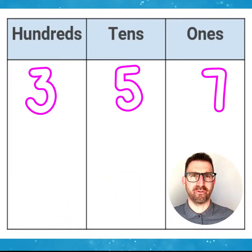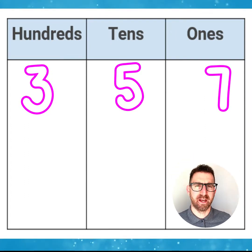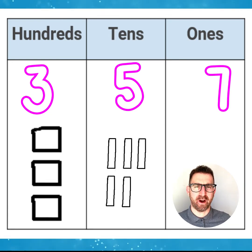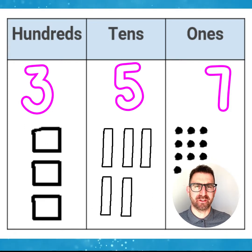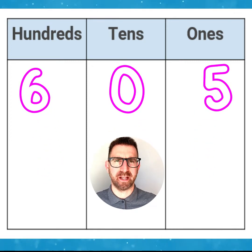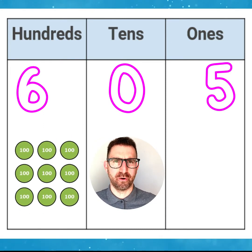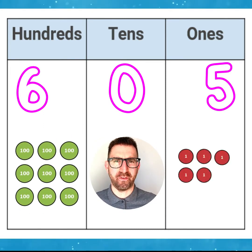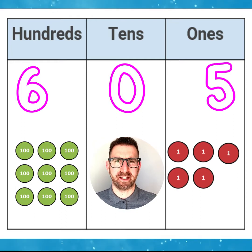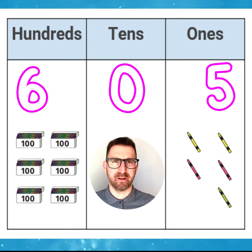Numbers to 1000 can be represented in different ways. For example, drawings could be used to represent a number such as 357. Here we have representations of base 10 — 3 squares, 5 rectangles and 7 dots to represent this number as a drawn version. Counters and pictures could also be used to represent numbers such as 605. Here we have 6 counters in the 100's column, no 10's in the 10's column, and 5 counters in the 1's column, making 605. Or we could use pictures with numbers to represent the same number.